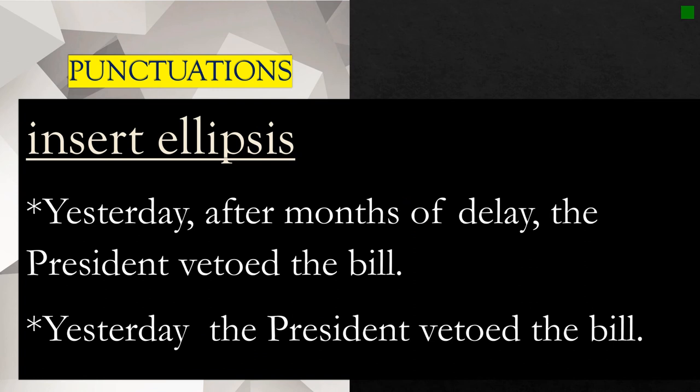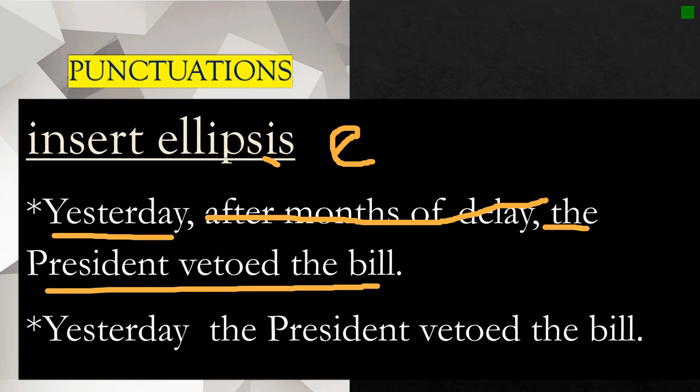Another one is the ellipsis. Ellipsis singular, ellipses plural. Yesterday, after months of delay, the president vetoed the bill. For example, you are omitting this portion. You want to omit that and only retain this one. Yesterday, the president vetoed the bill. So what do you do? You insert ellipsis. Inserting ellipsis is just like inserting three periods. You have this period and then encircle. And then encircle. Or three small x's. That's how you insert the ellipsis.